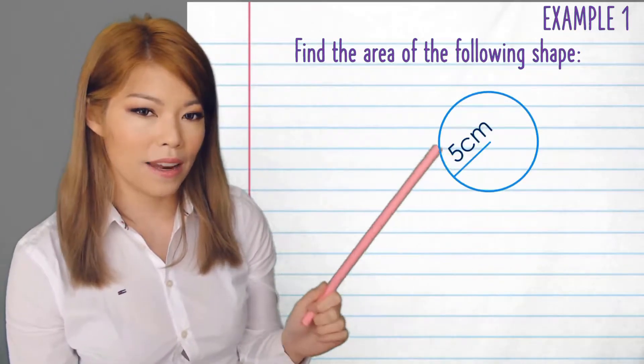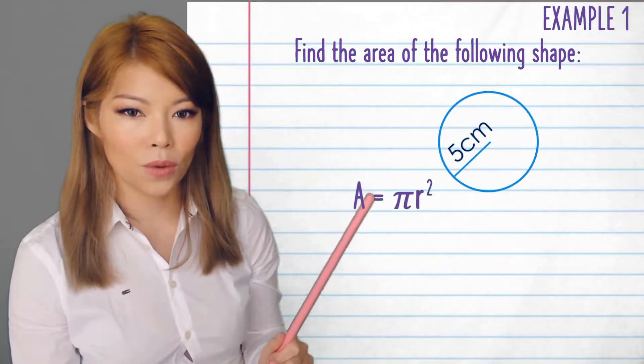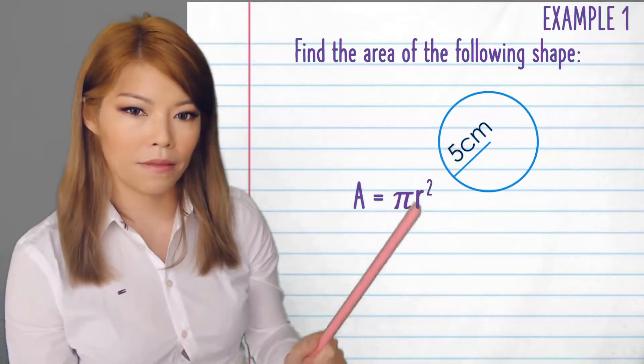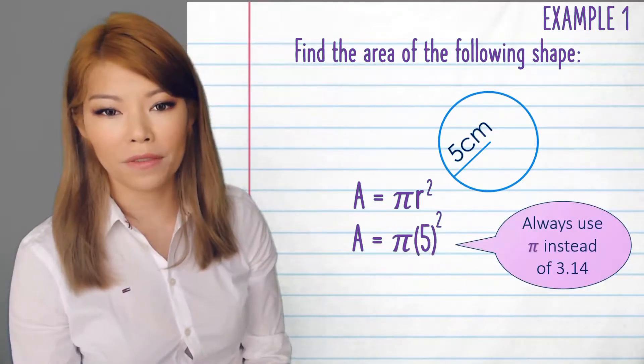So here we have a circle and 5 is the radius. So we're going to use pi r squared and by plugging in 5 where the r is. So we have pi times 5 squared, or in other words, 25 pi.